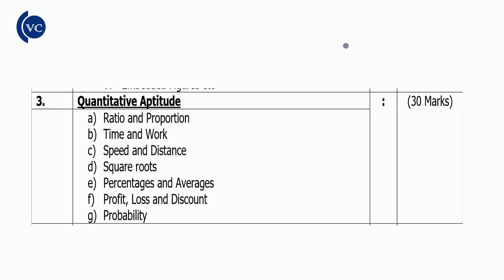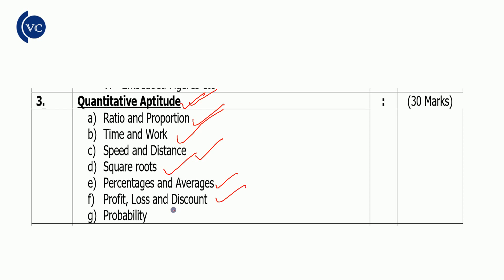Quantitative aptitude topics include ratio, proportion, time and work, speed and distance, square roots, percentage and average, profit, loss and discount, and probability. The quantitative aptitude section has a good variety of questions.